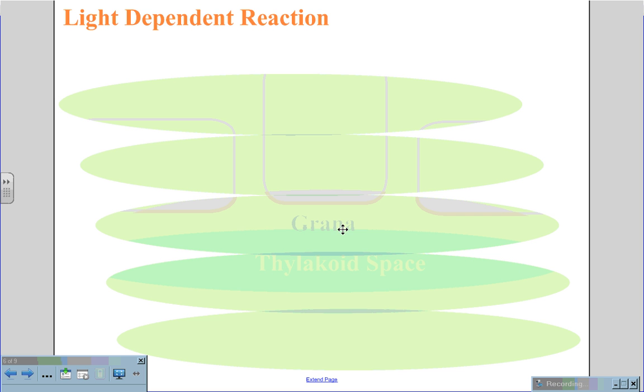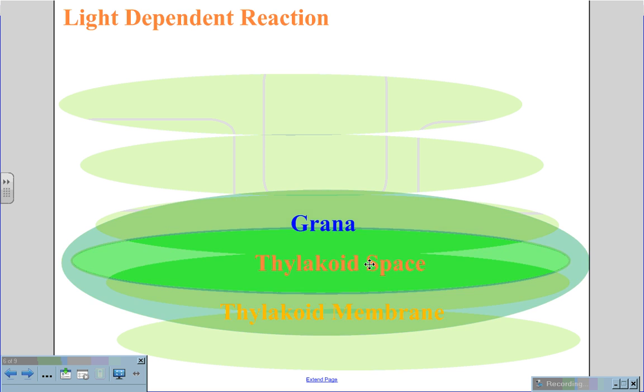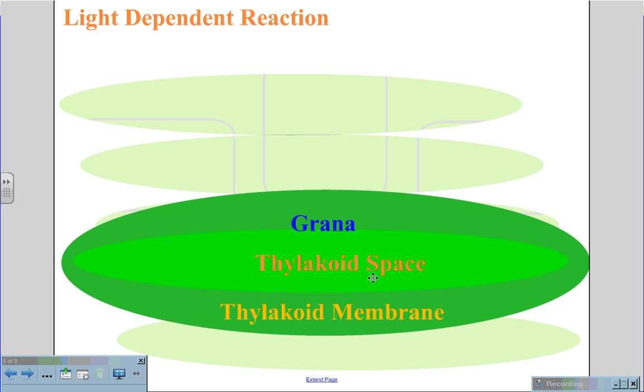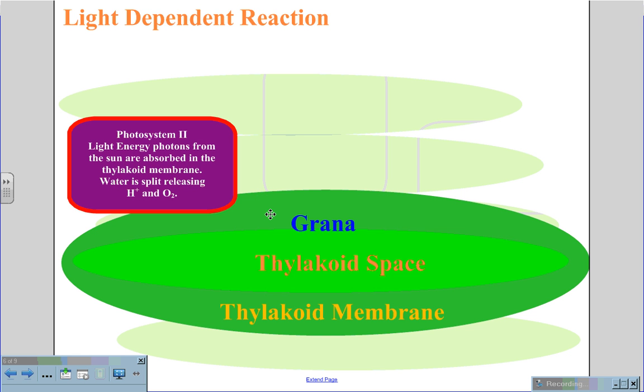Here we have the grana again. And again, this process of the light-dependent reaction takes place in the thylakoid membrane, or the thylakoid space. So here we have the grana with the thylakoid space and its thylakoid membrane.